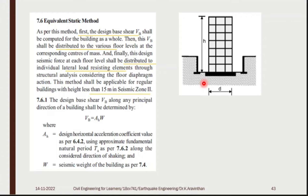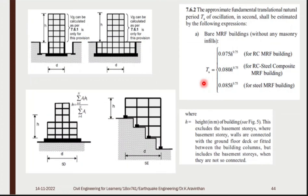The formula to find VB: B stands for base and V stands for shear. VB is found by AH into W. You need to find the weight of the building as the next step.